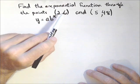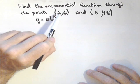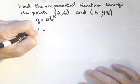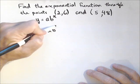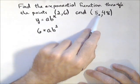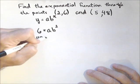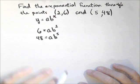Now, what we're going to do is we're going to set up a model for each point. This is an x value, this is a y value. So, if I plug those in, I get 6 equals a, b to the 2. And I'll do the same thing with this point. 48 equals a, b to the 5. And I write them right on top of each other, and you're going to see why in a second.